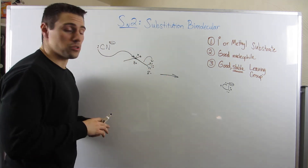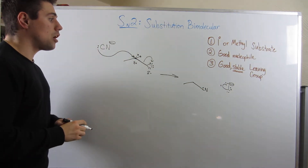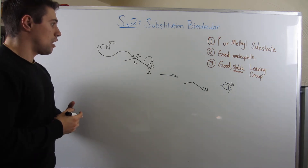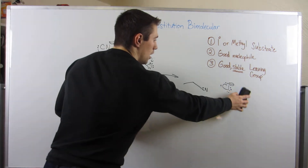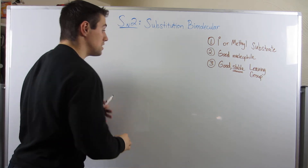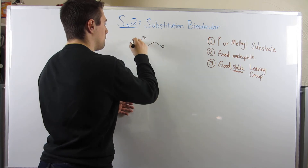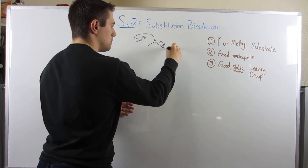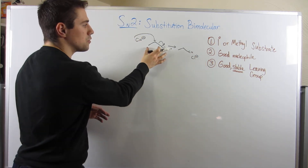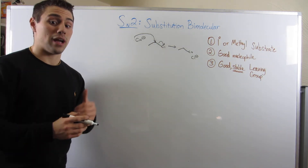Let's draw the organic product we just produced. That's another example of an SN2 reaction. Now let me draw another SN2 reaction and show you how stereochemistry comes into play. The carbon we attacked in the previous example was not a stereocenter. Here's what happens if we do have a stereocenter.